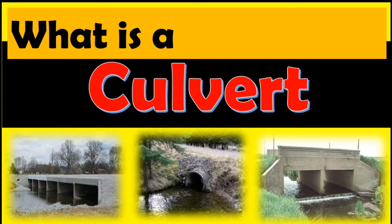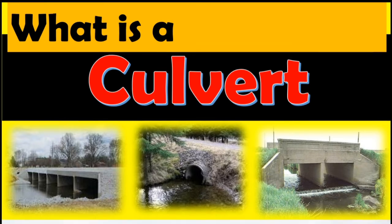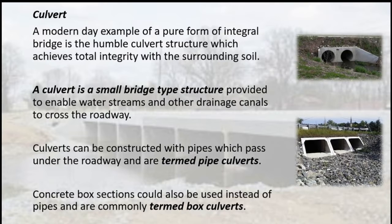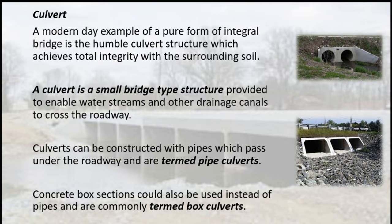What is a culvert? A modern-day example of a purer form of integral bridge is the humble culvert structure, which achieves total integrity with the surrounding soil. A culvert is a small bridge-type structure provided to enable water streams and other drainage canals to cross the roadway.